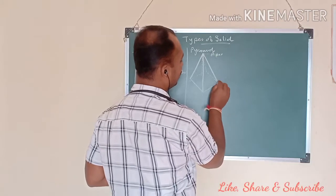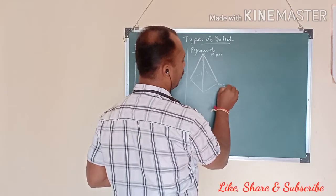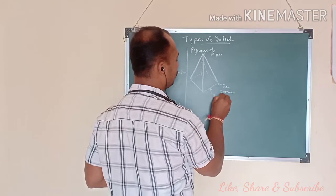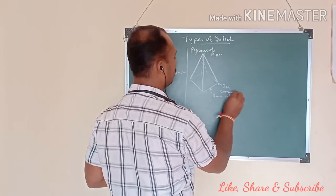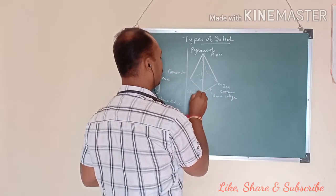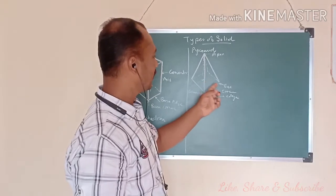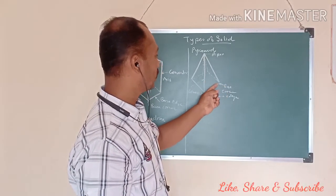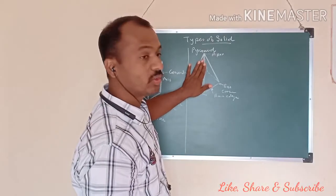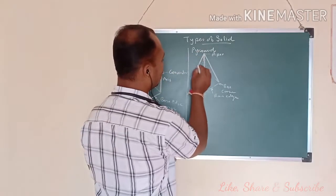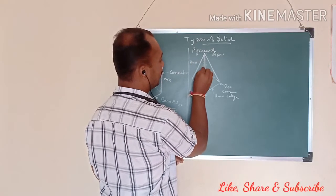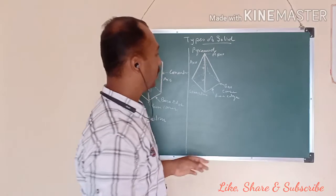This point is called the apex. It has a base, a base corner, and a base edge. The slant lines are called generators. This face is called a triangular face, and this line is the axis. So in the pyramid: apex, base, base corner, base edge, generators, triangular faces, and axis.